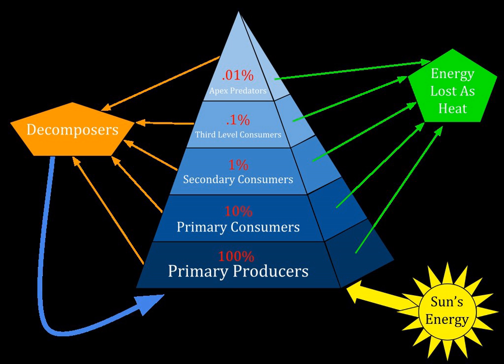Biomass can be measured by a bomb calorimeter. The concept of pyramid of numbers, or Eltonian pyramid, was developed by Charles Elton. Later, it would also be expressed in terms of biomass by Boddenheimer. The idea of pyramid of productivity or energy relies on the works of G. Evelyn Hutchinson and Raymond Lindeman.